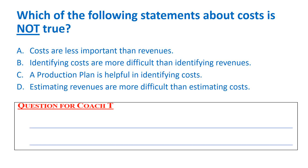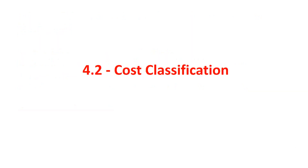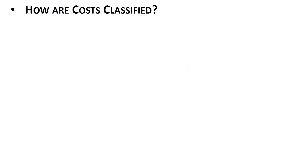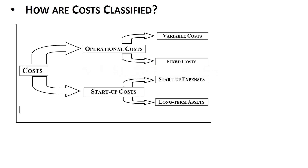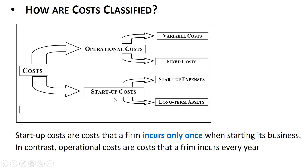Now we go to cost classification. Once we identify and estimate, we need to classify costs. Costs are classified first into operational costs and start-up costs. What is the difference?